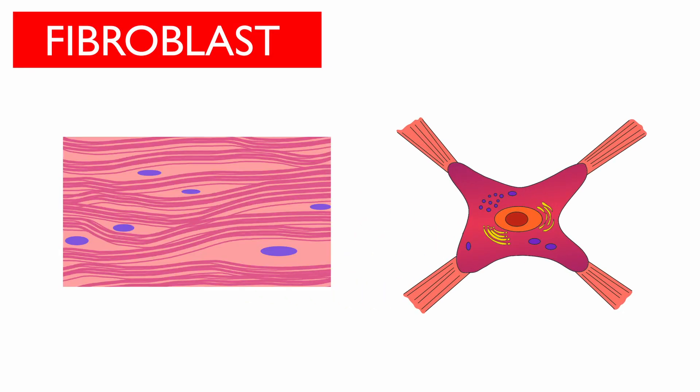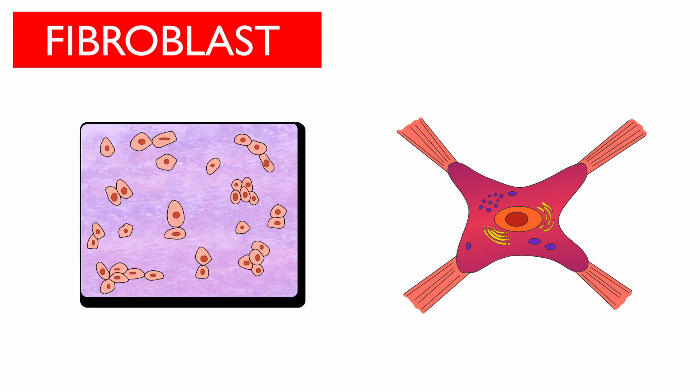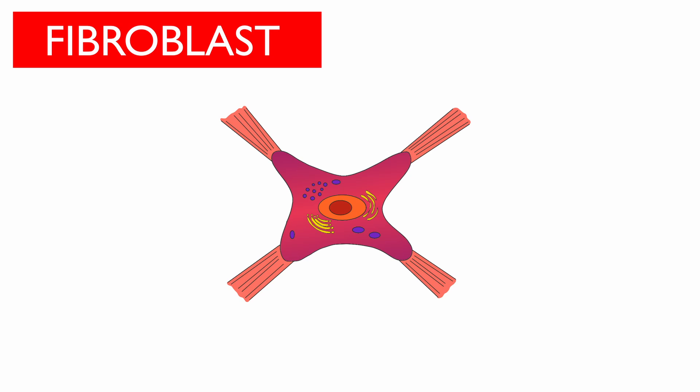The function of fibroblast cells is to form the fibers that make up connective tissues and also secrete the matrix of the connective tissue. They are irregular in shape and large in size.